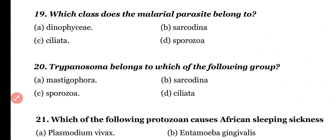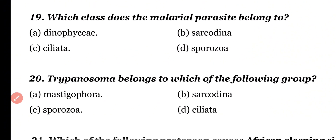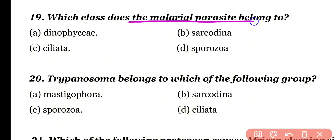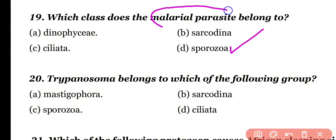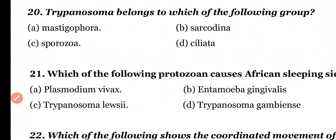Question number 19: Which class does the malarial parasite belong to? Dinoflagellata, Sarcodina, Ciliata, or Sporozoa? Correct answer is option D. The malarial parasite belongs to Sporozoa. The malarial parasite, as we know, is Plasmodium.